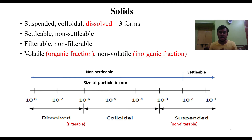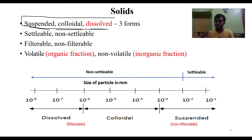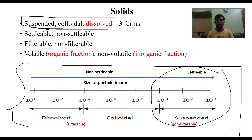Solids in wastewater can exist in three forms: suspended, colloidal, or dissolved, depending on particle size. Suspended solids range from 10⁻³ to 10⁻¹ in size and are settleable. Colloidal and dissolved solids are non-settleable and much smaller in size.